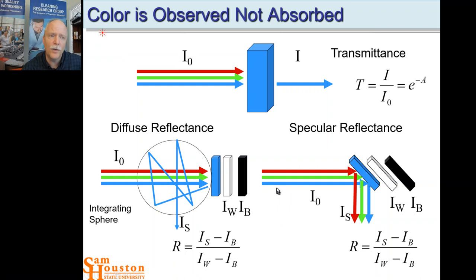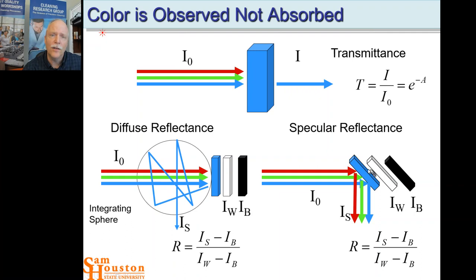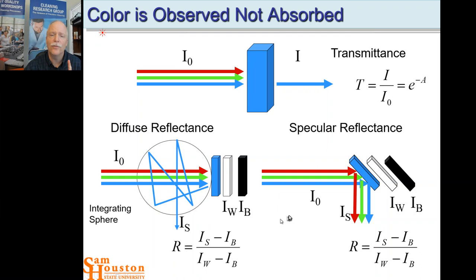Specular reflectance preserves the angle: if light comes in at 45 degrees normal to the surface, it leaves at 45 degrees normal. We again use black and white standards. The total reflectance is the sum of diffuse and specular. This is also a great measure of surface roughness — a very smooth surface gives high specular and low diffuse reflectance, while a very rough surface gives low specular and high diffuse reflectance. A measure of surface roughness is diffuse reflectance divided by total reflectance.